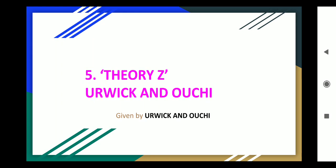Theory Y states that the individual is very positive and motivated — engaged in decision-making, goal setting, and willing to take responsibility. All the positive and good things are in Theory Y and all the negative things are in Theory X. This leads us to Theory Z, from Urwick and Ouchi.